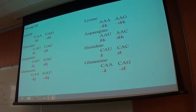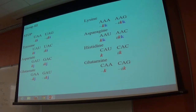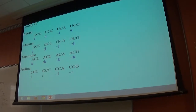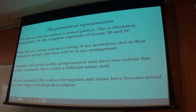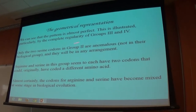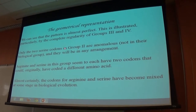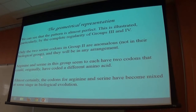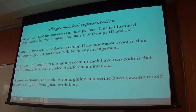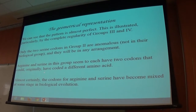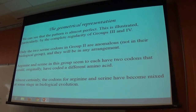Group three is perfectly regular. Group four is similarly absolutely perfect. So there's some sort of structure going on in this process. The pattern is almost perfect, particularly groups three and four. Only the two serine codons in group two are anomalous and not in their biological group — that will happen in any arrangement. That's because arginine and serine seem to have two codons that should have originally coded for a different amino acid.